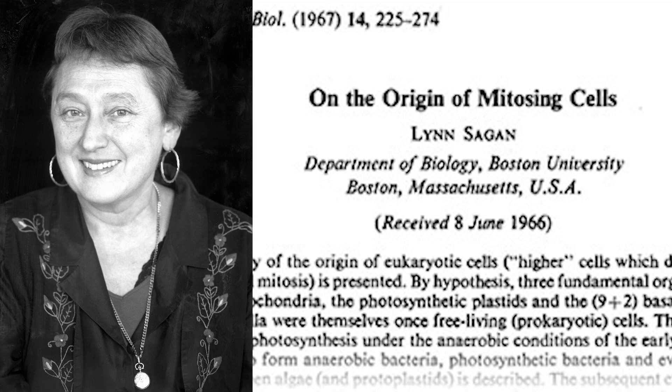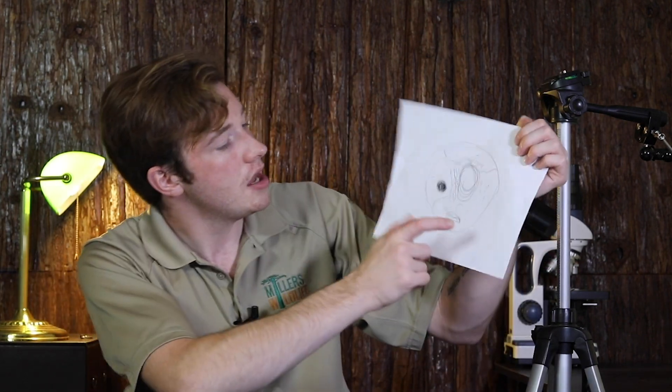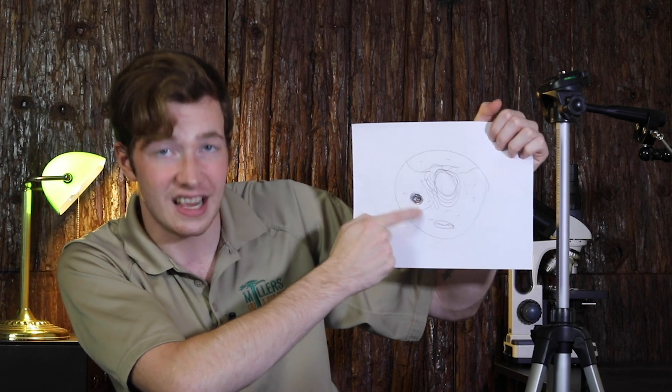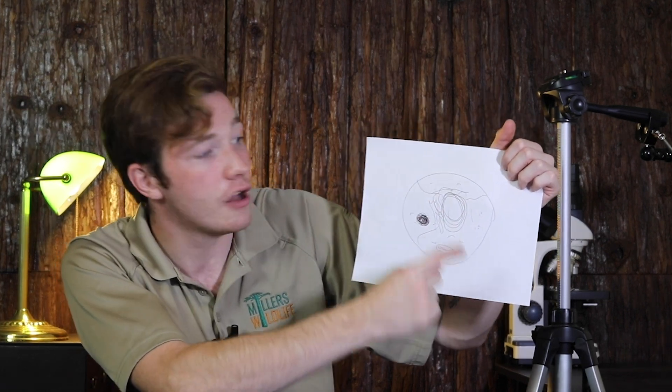If you think this story sounds a little bit too weird to be true, you're not alone. When biologist Lynn Margulis first proposed this theory to the scientific community in 1970, she was met with a lot of skepticism. But as time went on, evidence mounted, and now the theory of endosymbiosis is one of the cornerstones of modern evolutionary biology. The most convincing piece of evidence to support the theory of endosymbiosis is the fact that both the mitochondria and the chloroplasts contain separate DNA from the nucleus. This indicates that both of these organelles were once completely separate organisms with a bacterial heritage.